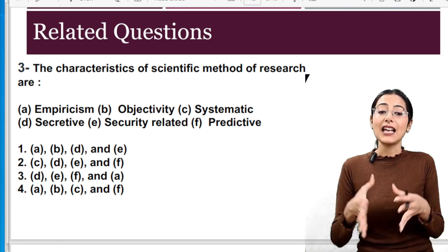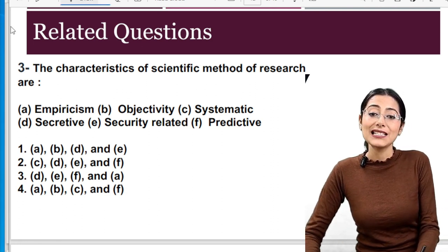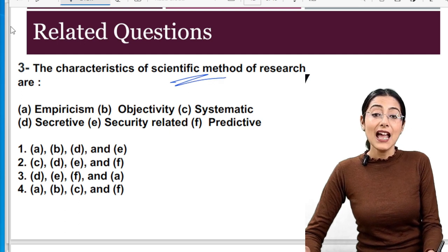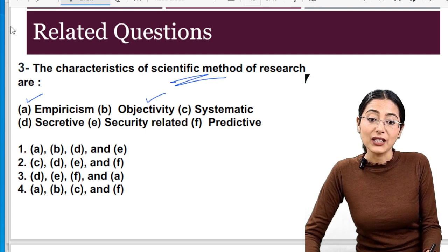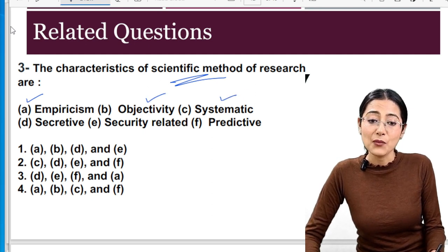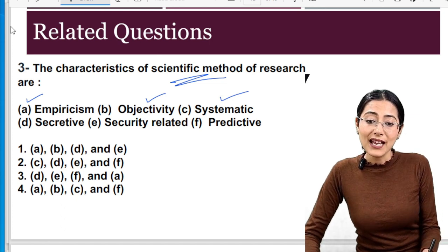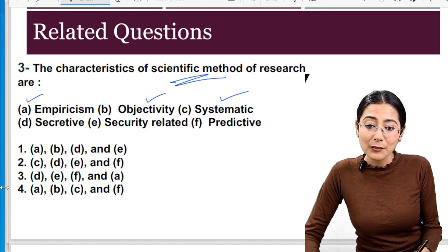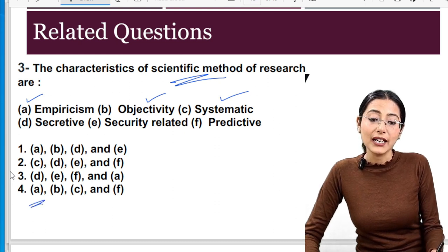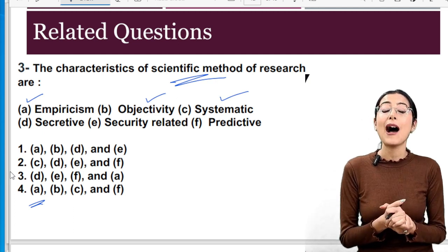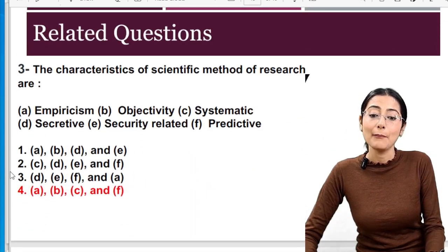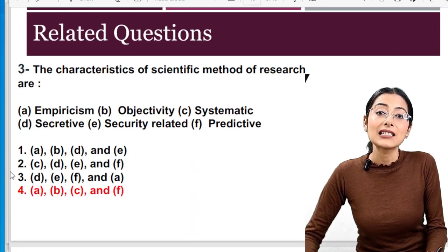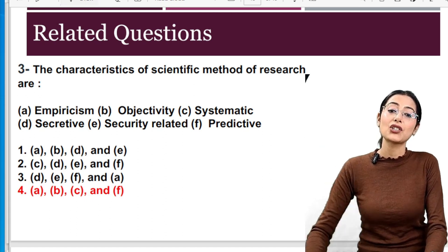Question 3: What are the characteristics of scientific method of research? Empiricism — yes. Objectivity — yes. Systematic — yes. So we have A, B, and C. And predictive — that you must be able to predict from your research — which is also very correct. So the answer includes empiricism, objectivity, systematic approach, and predictive ability. See how easy these questions become once you know the keywords.